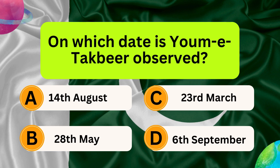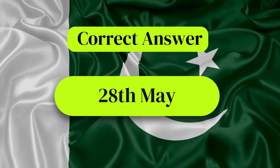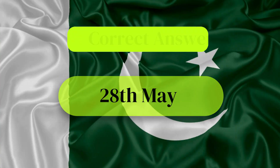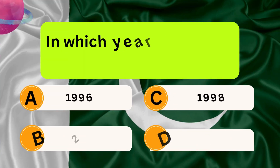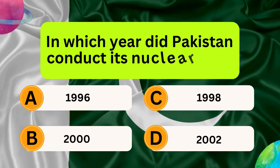On which day is Jami Takbir observed? Options: 14th August, 23rd March, 28th May, 6th September. Correct answer is 28th May.